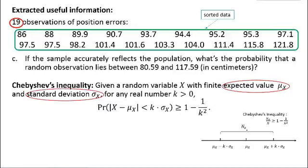But we now only have a sample at hand. Fortunately, it's assumed that the sample accurately reflects the population. So, we can use the obtained sample statistics as the population parameters. Then, the expected value equals 99.09. The standard deviation equals 9.25.